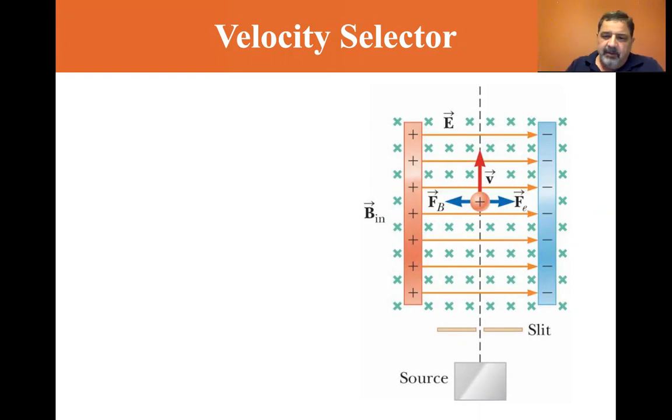So again, the convention, you see the magnetic field is going into the computer screen from my perspective. Magnetic field is this way. You have a positive particle. So from the electric field, you can see that there's a magnetic field going this way and there's an electric field going this way.